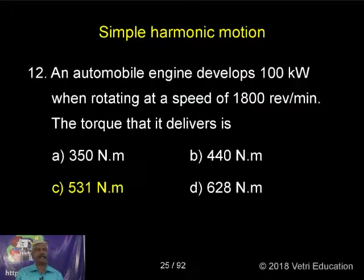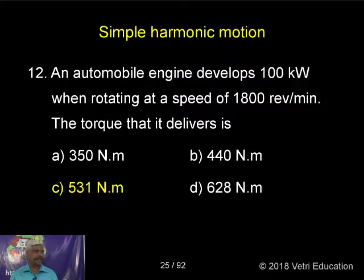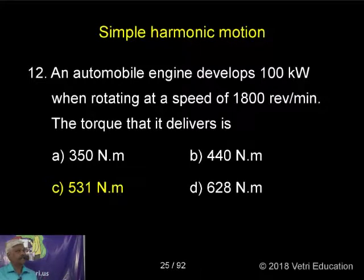1800 revolutions per minute — we have to convert it into revolutions per second. That is 1800 divided by 60, which gives us the angular speed in RPS.